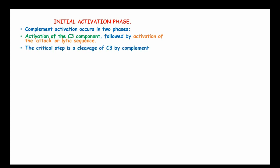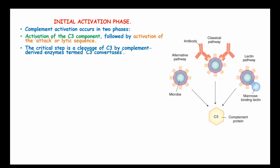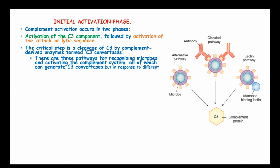The critical step is the cleavage of C3 by complement-derived enzymes termed C3 convertases. There are three pathways for opsonizing microbes and activating the complement system, all of which can generate C3 convertase but in response to different stimuli.